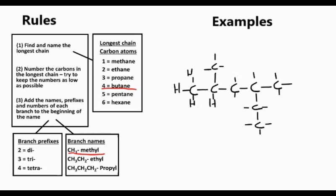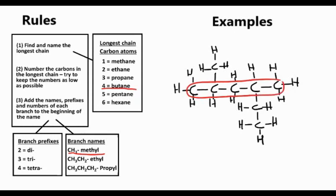And the first step, remember, is going to be to find the longest carbon chain. So let's have a look at that chain down the middle of the molecule. There's five carbons. No, actually, that's not our longest carbon chain. Have a look again. This is a trick question.